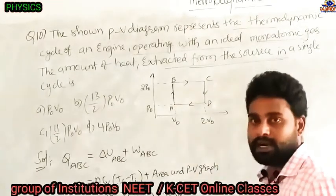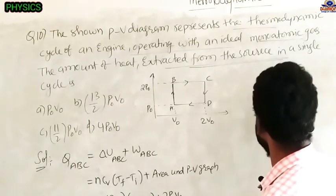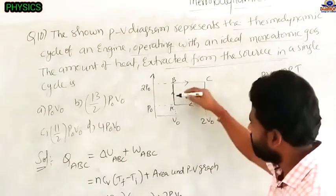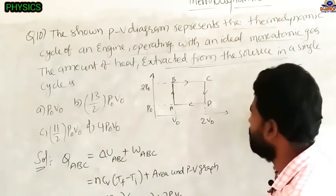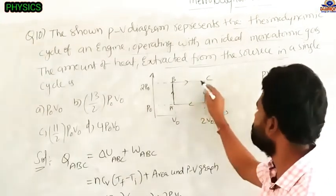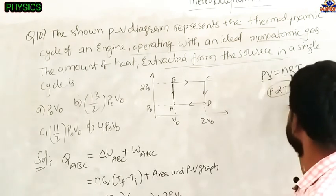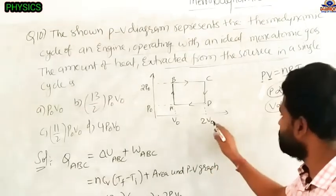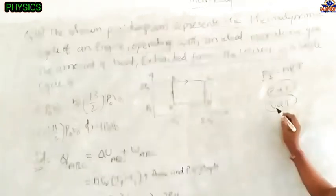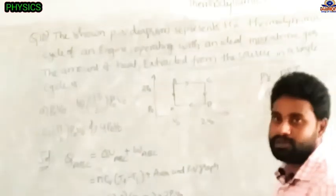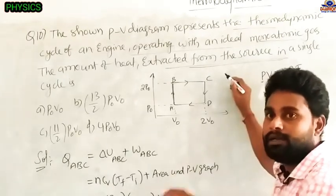From B to C, pressure is constant at 2P₀ and volume increases from V₀ to 2V₀, so temperature increases and system absorbs heat. From C to D, volume is constant and pressure decreases from 2P₀ to P₀, so temperature decreases and heat is given out. From D to A, pressure is constant and volume decreases, so heat is given out.